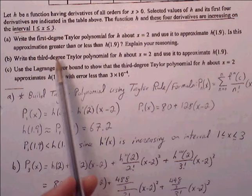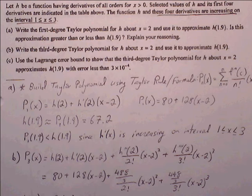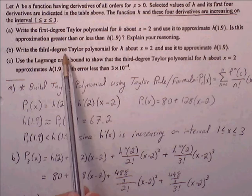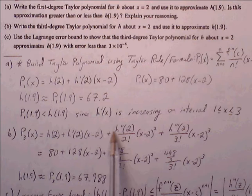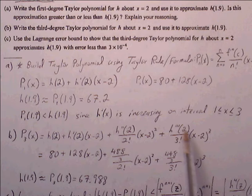Part B: write the third degree Taylor polynomial for h about x equals 2 and use it to approximate h of 1.9. The first two terms are still the tangent line equation. We then build using the Taylor rule: add the second derivative evaluated at 2 over 2 factorial times (x minus 2) squared, and then the third derivative evaluated at 2 over 3 factorial times (x minus 2) cubed.